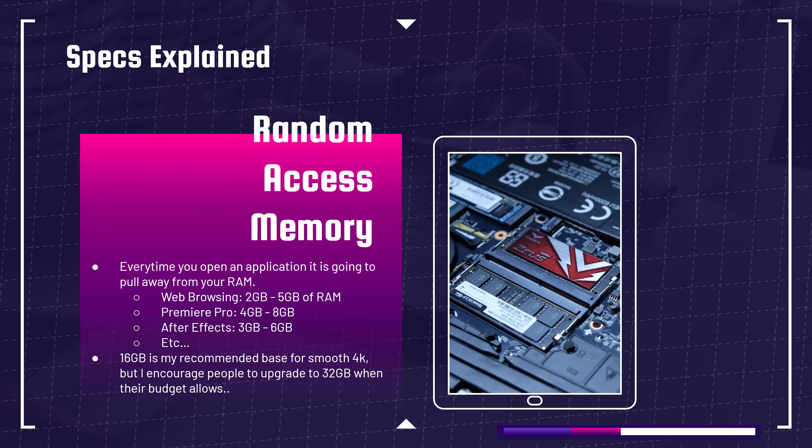In this video, we're going to be looking at 8 gigs of RAM versus 16 versus 32 versus 64 for video editing. First and foremost, RAM stands for random access memory. And if you want to deep dive on all of the intricacies, you can find more info linked. But for the sake of this video, let's keep it simple.